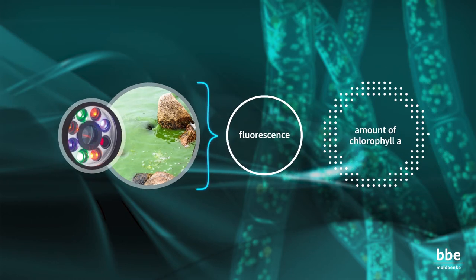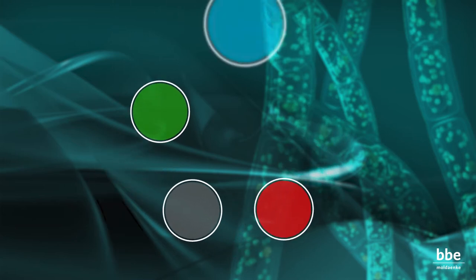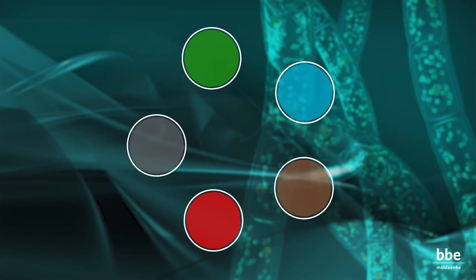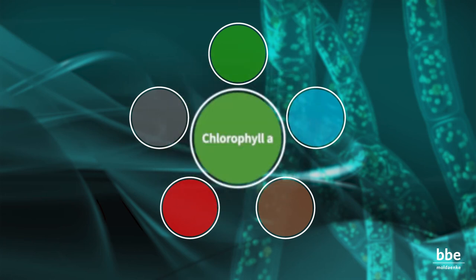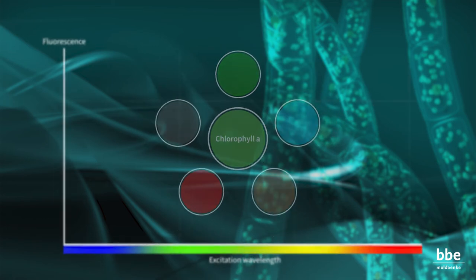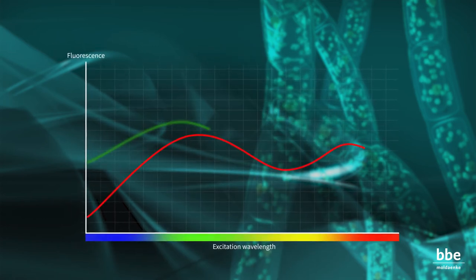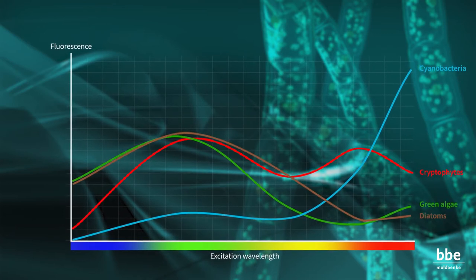This method is the basis of the determination in the BBE fluorometers. Five main spectral classes can be identified, which are related to the different algae pigments. These pigments cooperate with chlorophyll A to transfer the energy of the trapped light.